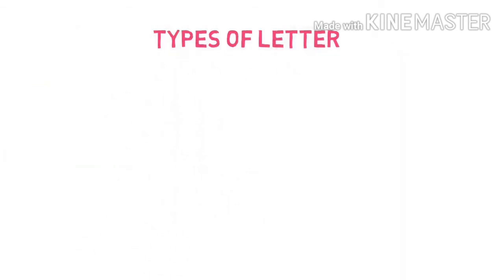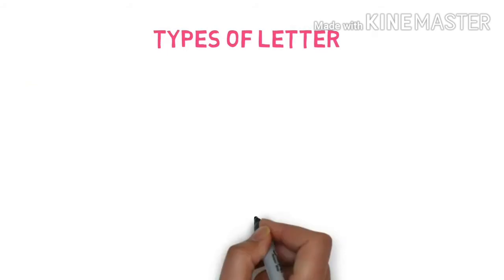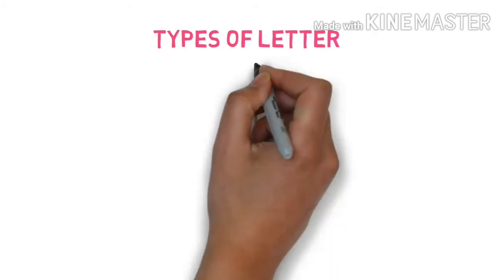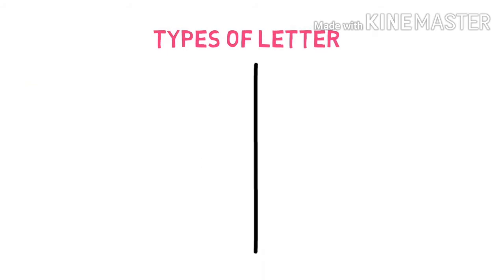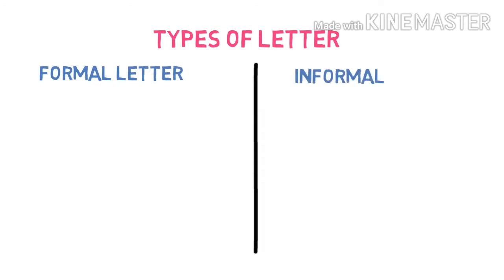So after that we studied the types of letters. I told you there are two types of letters: formal letters and informal letters. We had first studied about formal letters.